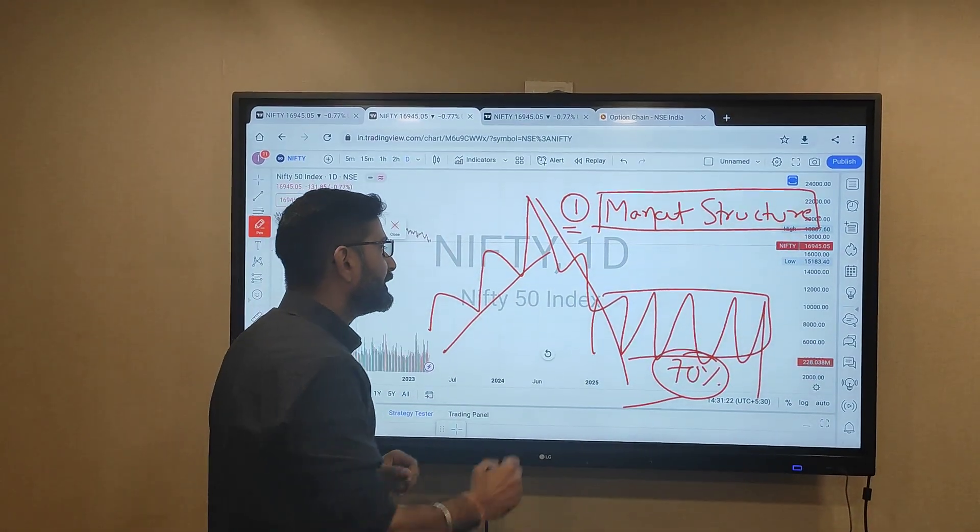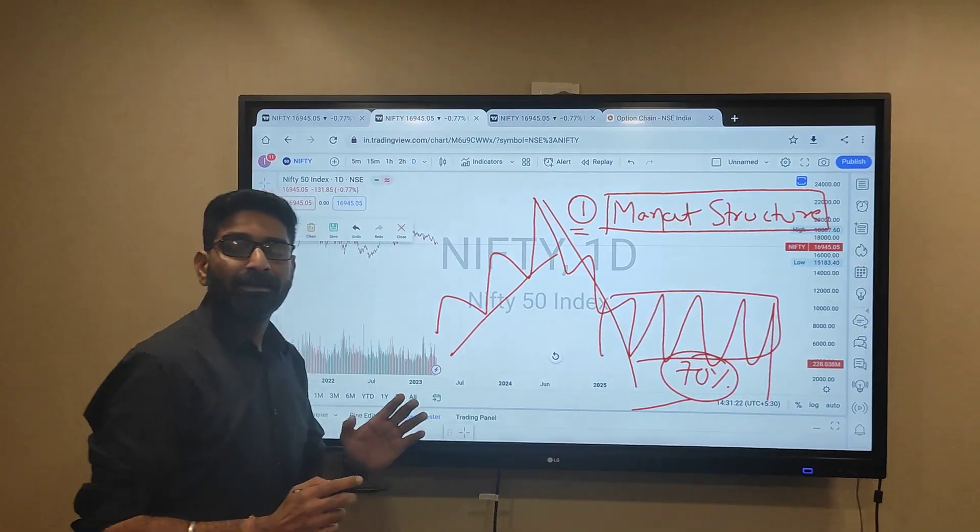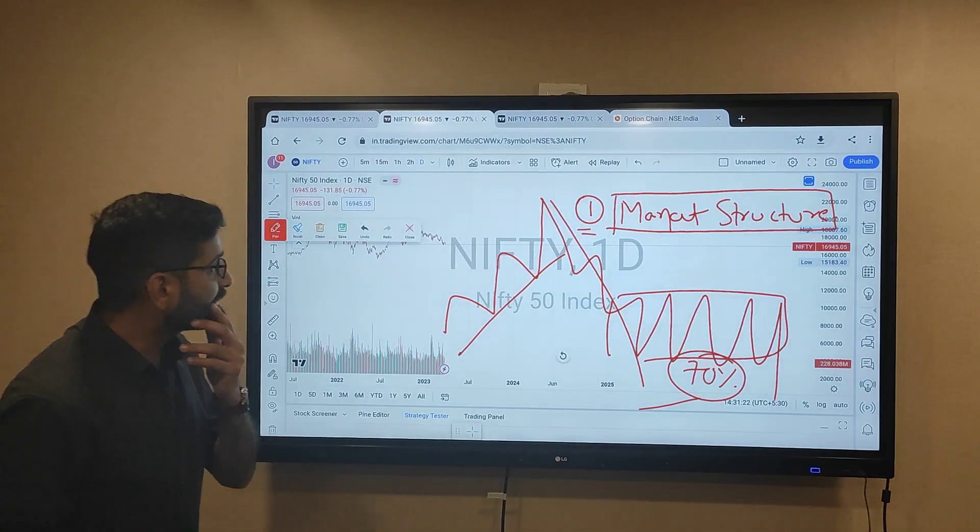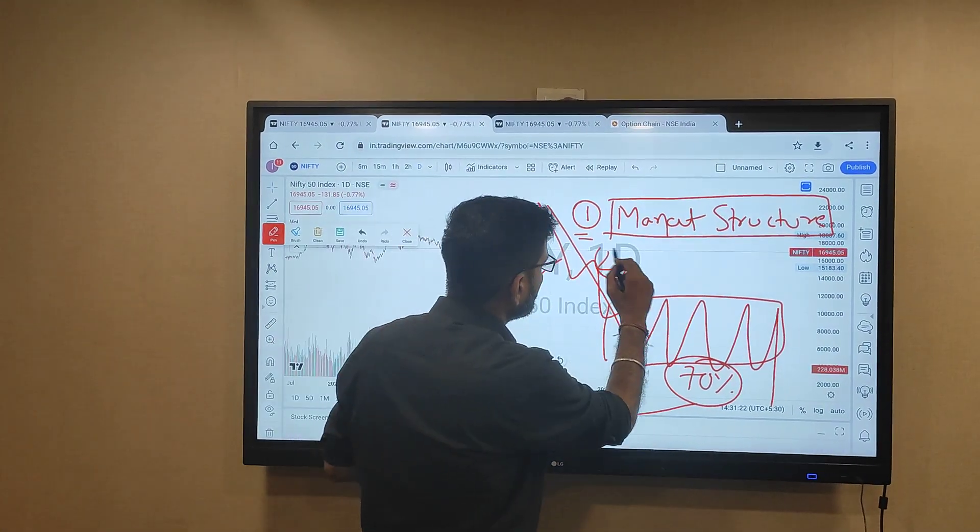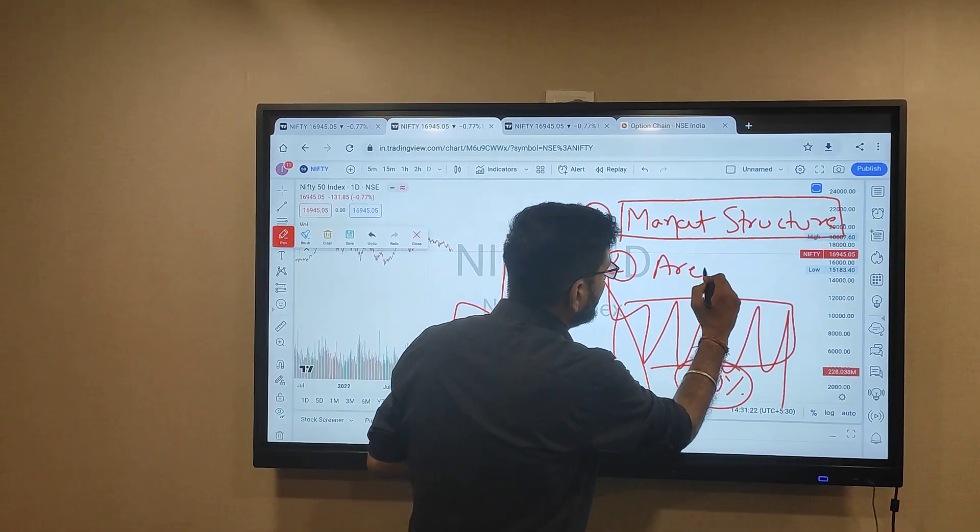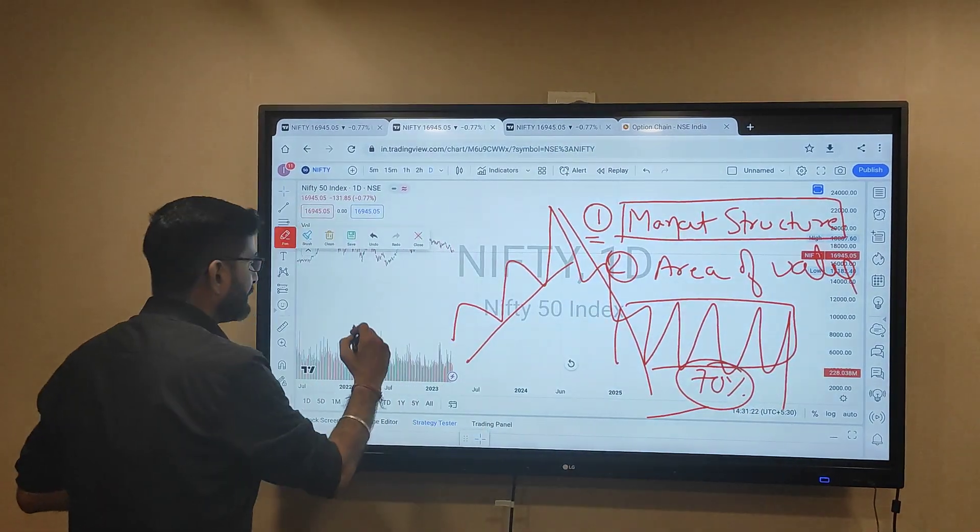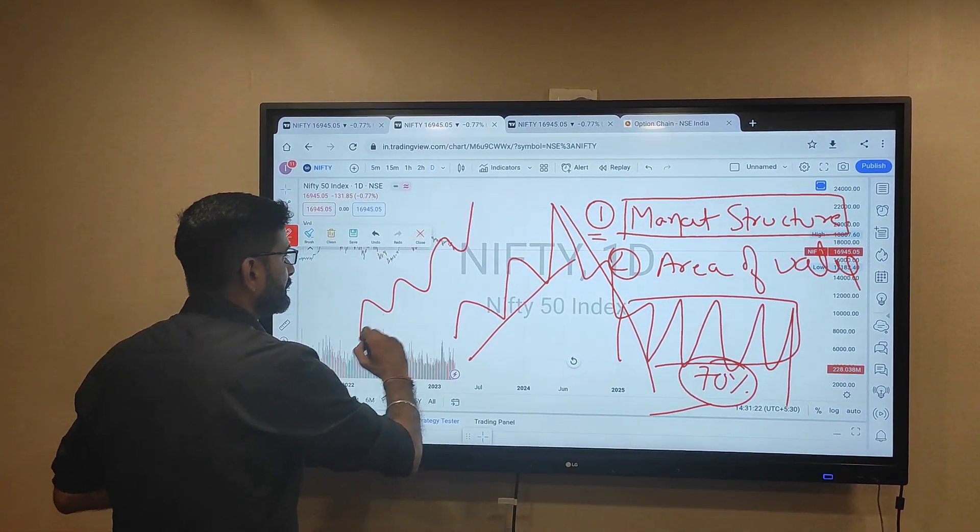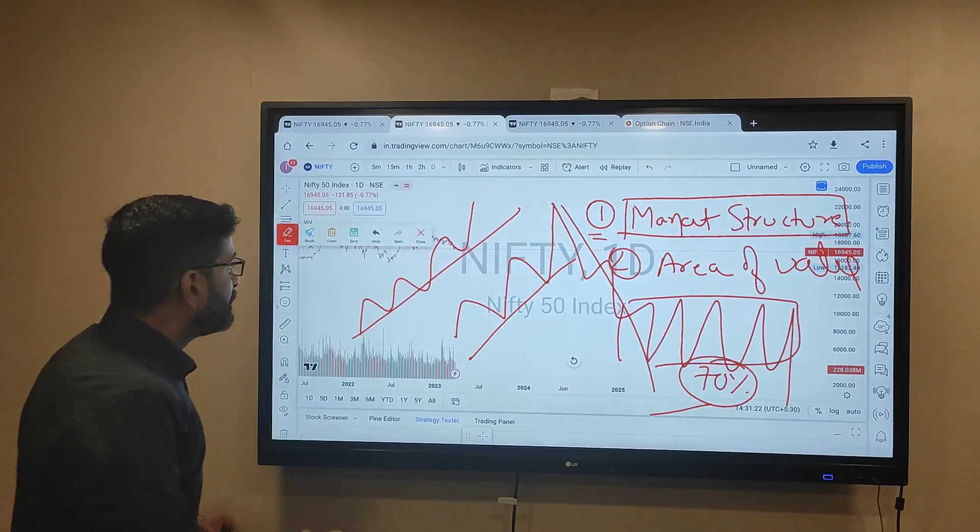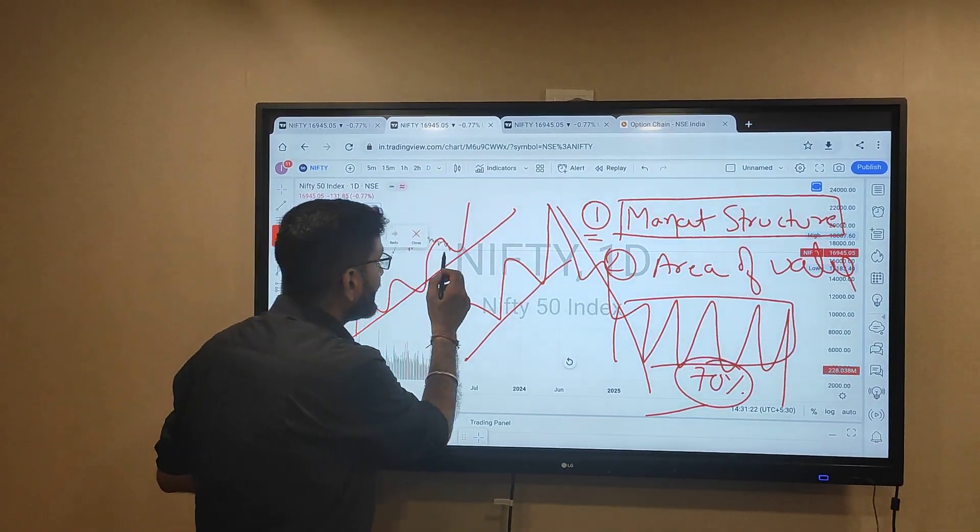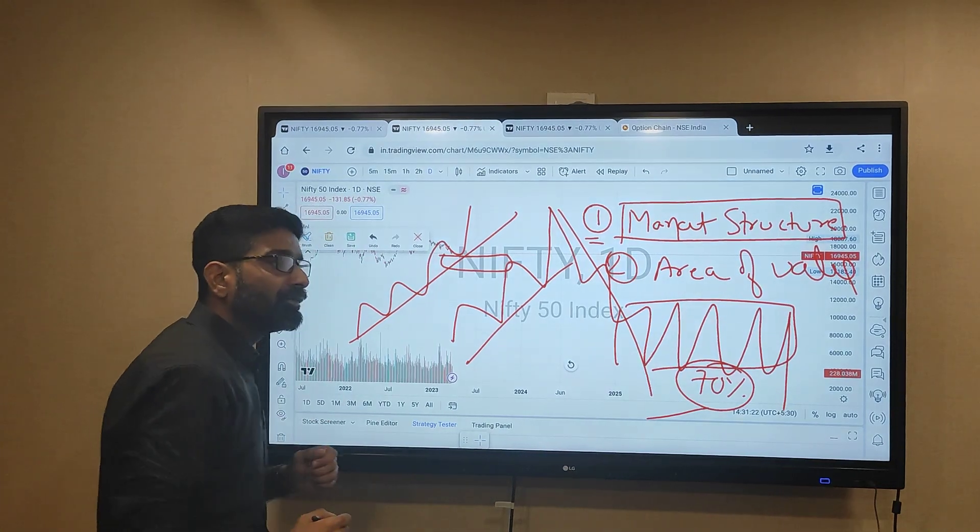Structure you need to identify - up, down. Then you have to decide the next part. After structure comes area of value. Area of value. For example, many stocks trend is up. But now, what is the area of value?